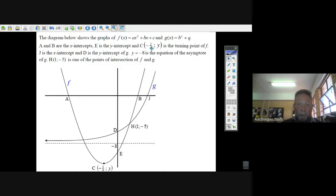Minus 3 quarters and y is the turning point of the parabola. And j is the x-intercept, and d is the y-intercept of g. Okay, that's the exponential equation.